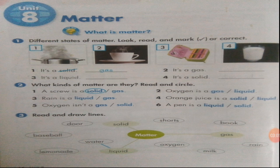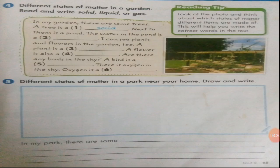Question number three: read and draw lines. Three states of matter are given along with some examples. You have to match the correct example with its state of matter. One is already done — liquid is matched with water as its example. In the same way, join the other states of matter with the correct examples.